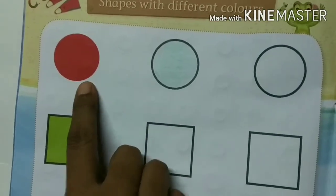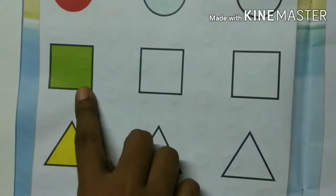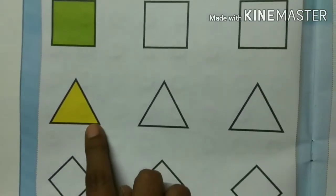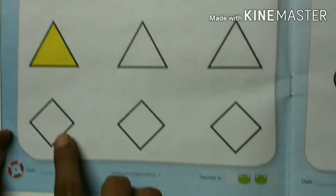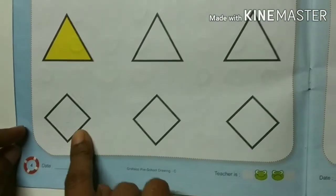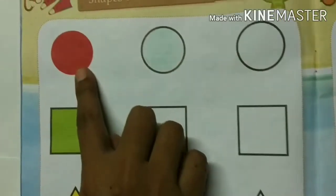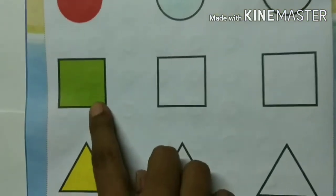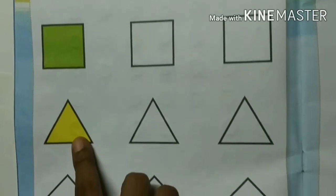This is circle. This is square. This is triangle. This is diamond shape. This is red color. This is green color. This is yellow color.